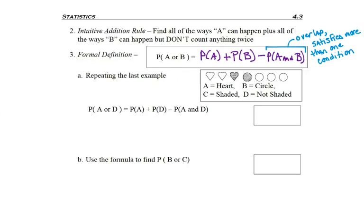So first thing I would have done is found the probability of A, three sevenths. Three of the seven shapes are hearts. Then I would have added the probability of D.